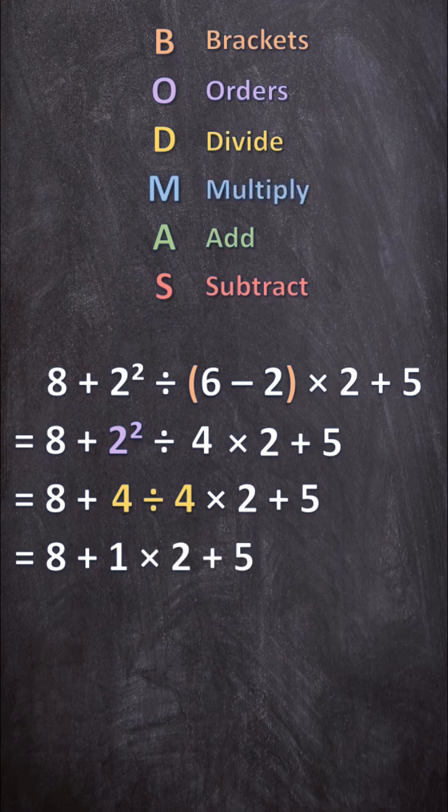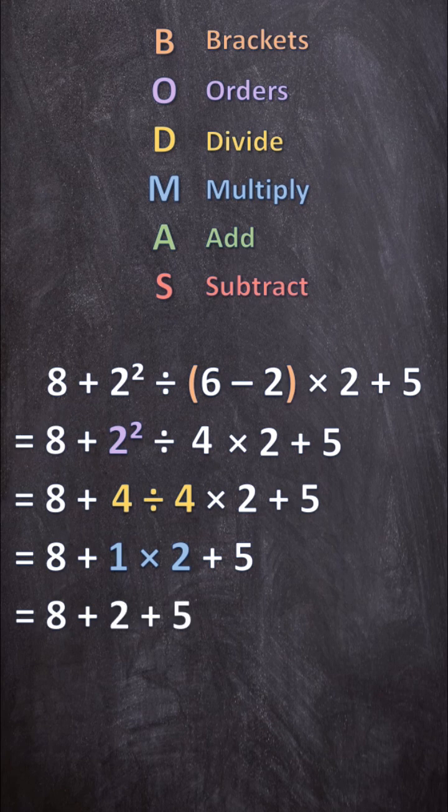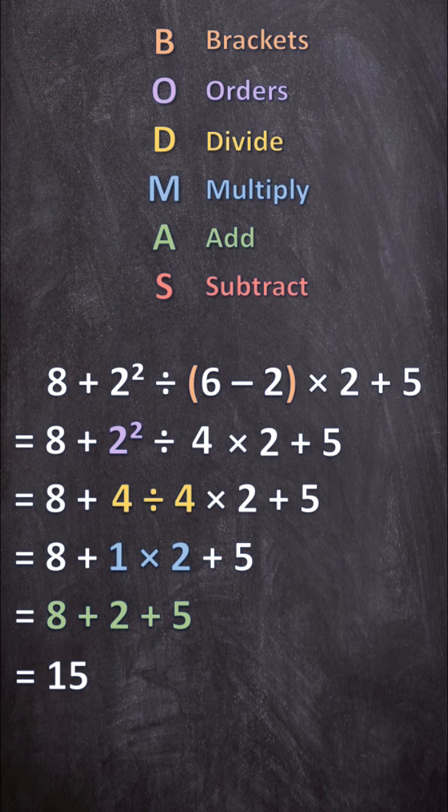Next we have multiplication, so we're going to get the answer for 1 times 2 and 1 times 2 is 2. Next we need to add, so we add all of this together and 8 plus 2 plus 5 is 15 and that is our answer.